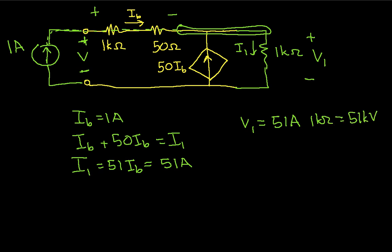The voltage, let's call it Vb, this voltage here, is going to be 1 amp Ib times 1.05 k ohms, which is 1.05 kilovolts. So that means that the total voltage V is going to be V1 plus Vb, which is 52.05 kilovolts.